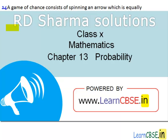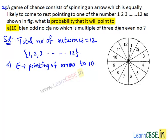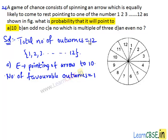Now let's see part (a). Here we need to find the probability that the arrow will point to 10. Let E be the event of pointing of arrow to 10. The arrow can point to 10 in only one way, so the number of favorable outcomes equals 1. We have total number of possible outcomes as 12. Then P(E) equals 1 divided by 12. Therefore, the probability of the spinning arrow pointing to 10 is 1/12.